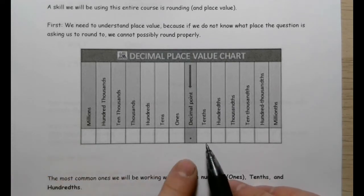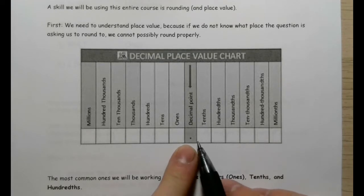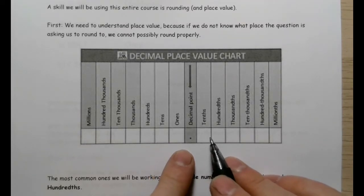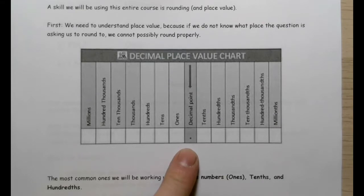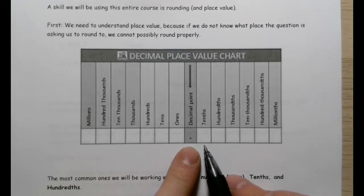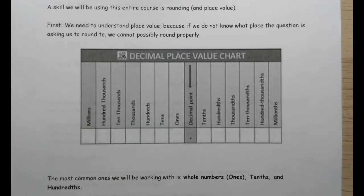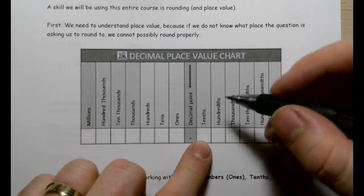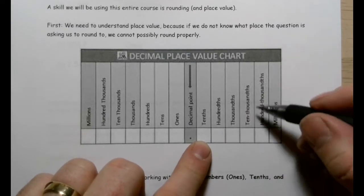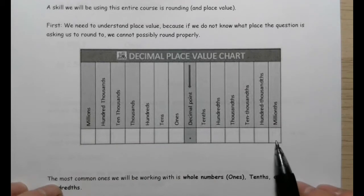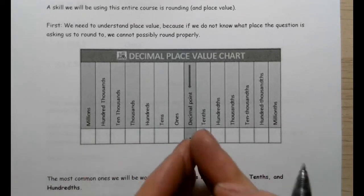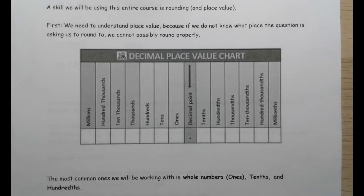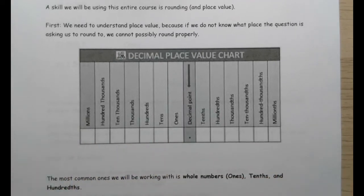It's when we get to the other side of the decimal that things can get a little foggy. Notice there's no 'one-ths' space — there's no symmetry like that. The first spot after the decimal is the tenths spot. We take a value, chop it into ten pieces, and this tells us how many of those we have. Then moving right: hundredths, thousandths, ten-thousandths, hundred-thousandths, millionths — all labeled with 'ths' at the end.